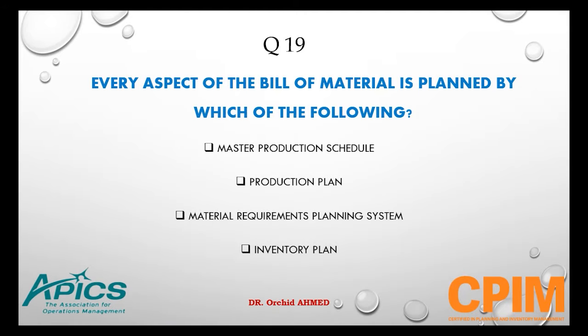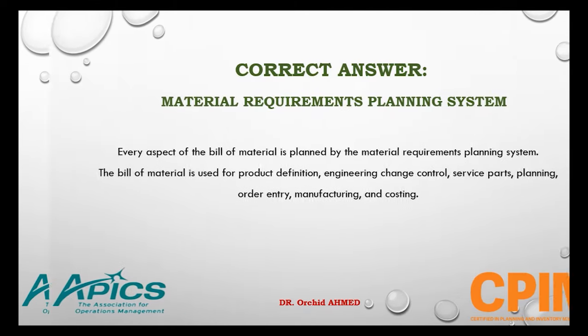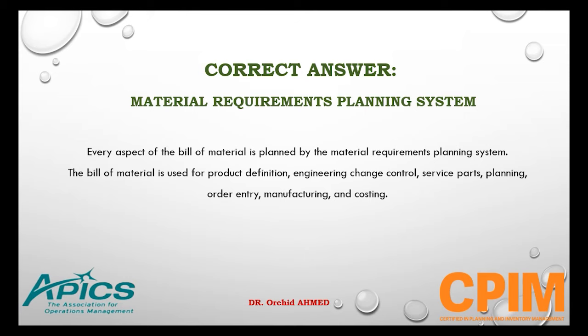Question number 19. Every aspect of the bill of materials is planned by which of the following? Options: master production schedule, production plan, material requirement planning system, or inventory plan. The right answer is the material requirement planning system. Every aspect of the bill of materials is planned by the MRP system, which is used for product definition, engineering change control, service parts, planning, order entry, manufacturing, and costing.